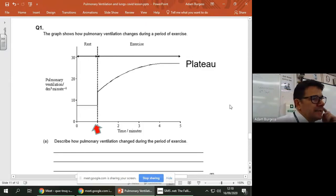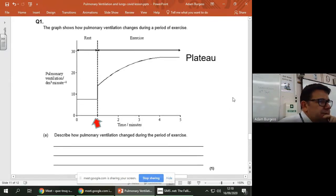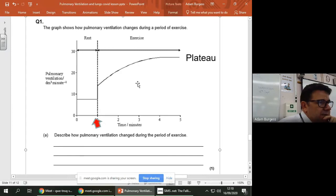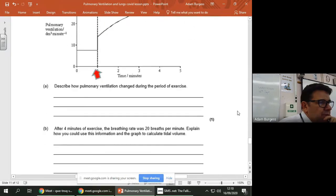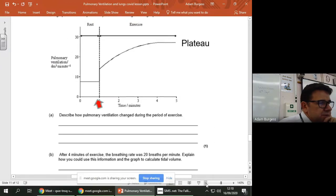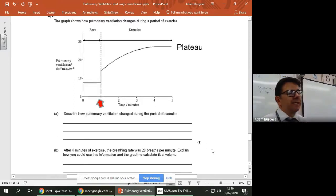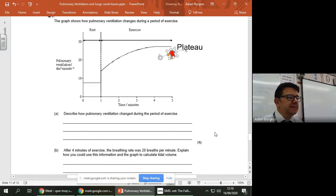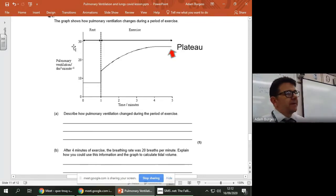Okay, don't worry too much about the answer, because I will share the answers later with you. Right, so the second question is a bit more involved, so this is two marks, and I am going to just reduce the screen slightly. There you go. So it says after four minutes of exercise, the breathing rate was 20 breaths per minute, so that'll be at that point there, so it's 20 breaths per minute. It says explain how you could use the information and the graph to calculate tidal volume.